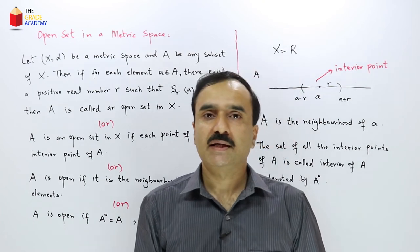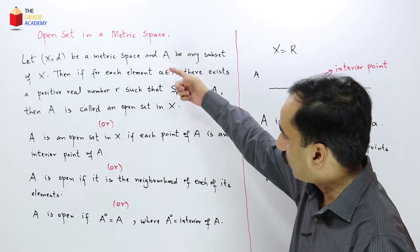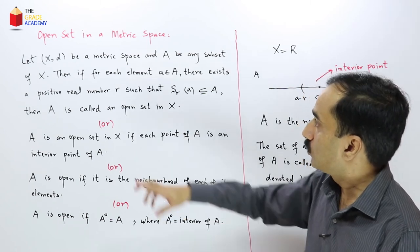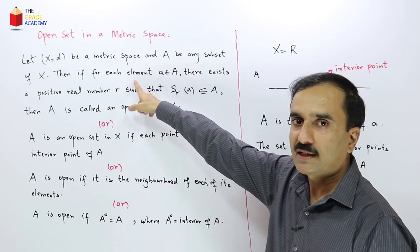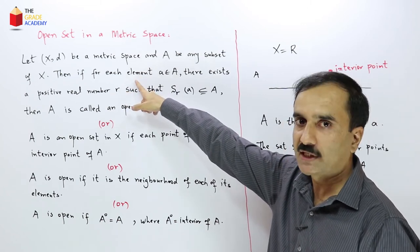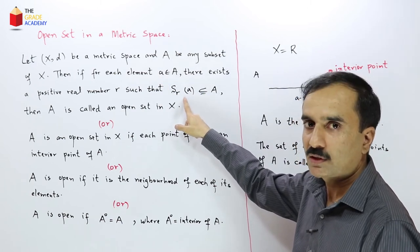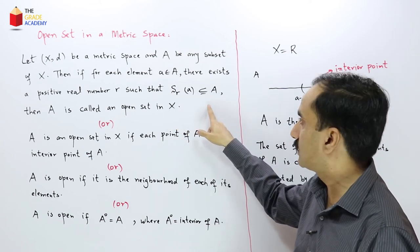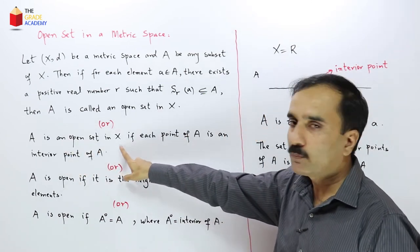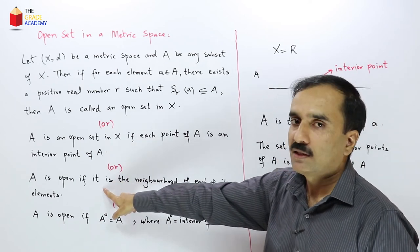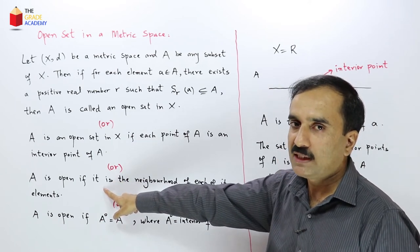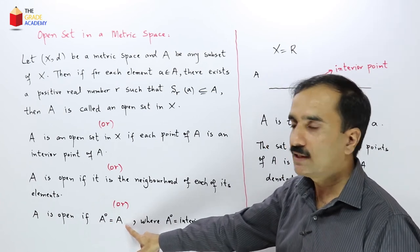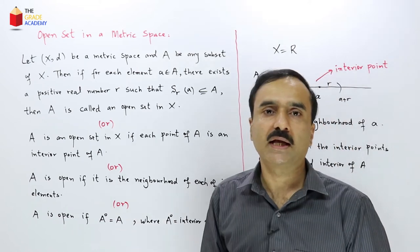We can define an open set inside a metric space by any of these four definitions: a subset is open if any open sphere drawn around each of its elements still lies in that set; or if each point is an interior point; or if the set is the neighborhood of each of its elements; or if the interior of the set equals itself.